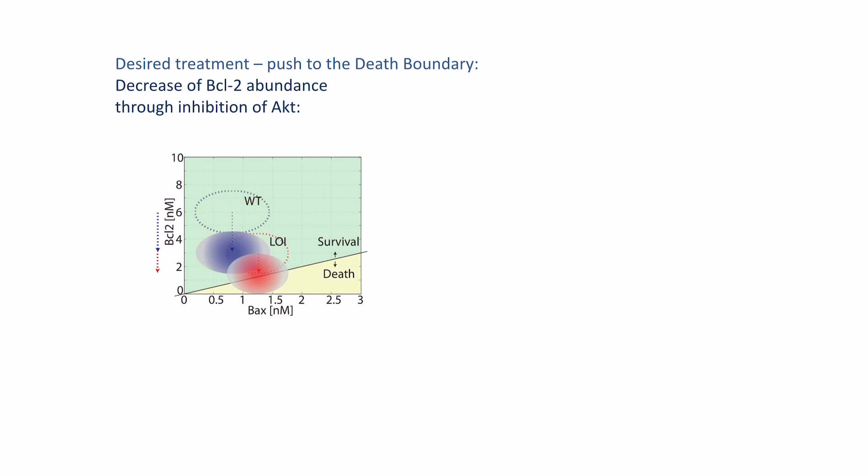So essentially, this prediction is shown schematically here. You can see that the drug, when it acts, it actually pushes both of the populations, depending on the dose, towards the death boundary. And now you can see that you can start selectively killing LOI cells, but not wild-type cells.